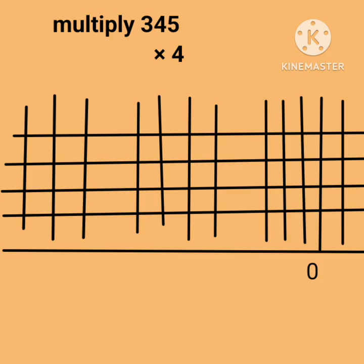Write 0, carry 2. The middle section gives 16; adding 2 becomes 18. Write 8, carry 1. Now counting the third section — we have 12; adding 1 becomes 13. Hence the answer is 1380.